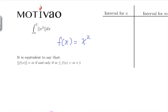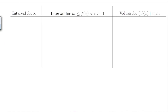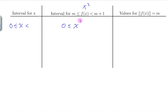Let's go to our table. The first value in the interval is 0. We want the values in this interval, and here f(x) is x squared. Now 0 squared is 0, and we add 1 to get 1, so the square root of 1 is 1.